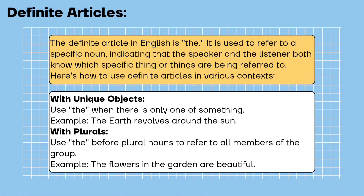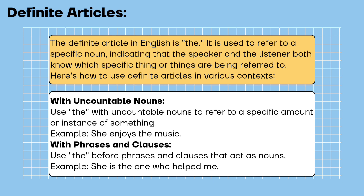With unique objects: use 'the' when there is only one of something. Example: the earth revolves around the sun. With plurals: use 'the' before plural nouns to refer to all members of the group. Example: the flowers in the garden are beautiful. With uncountable nouns: use 'the' with uncountable nouns to refer to a specific amount or instance. Example: she enjoys the music. With phrases and clauses: use 'the' before phrases and clauses that act as nouns. Example: she is the one who helped me.